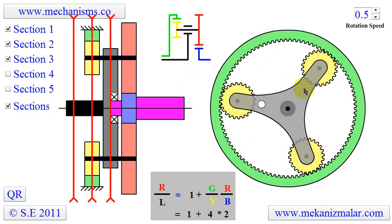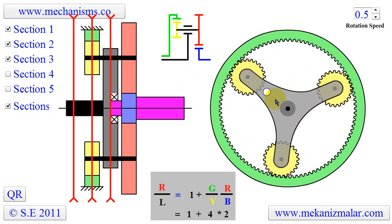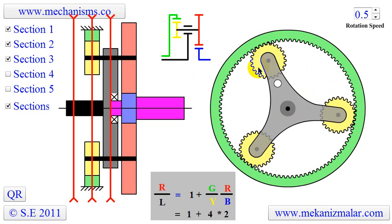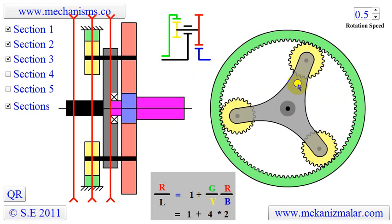The third section shows the carrier arm on which the yellow and red planets are attached. Notice that the input shaft is directly connected to the carrier.